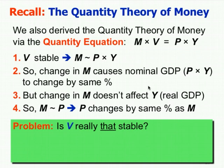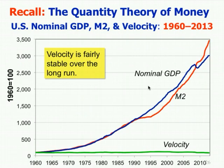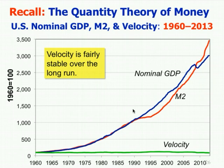But is the velocity of money really that stable? Here was the diagram about the quantity theory of money: U.S. nominal GDP, money supply measured by M2, and velocity from 1960 to 2013. Nominal GDP goes up as money supply goes up, and the velocity of money stays relatively constant — pretty stable, all indexed by 1960 values being 100. So velocity of money in the long run seems to be pretty stable.